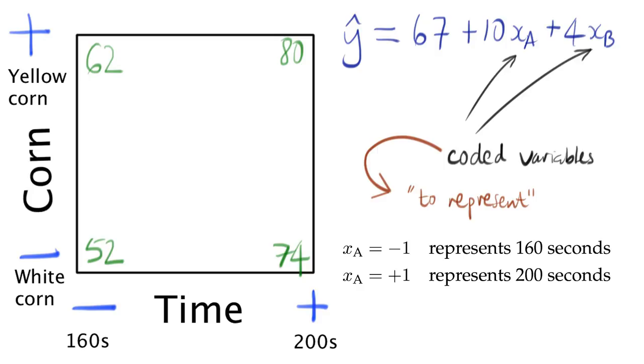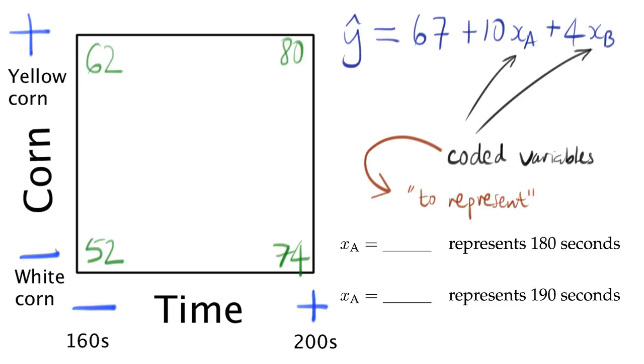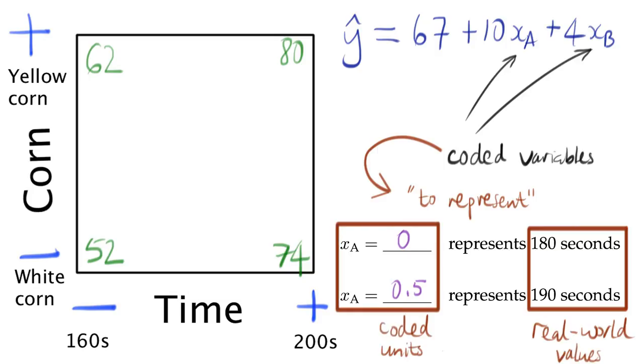For xa, the representation is similar. The minus 1 represents 160 seconds, and the plus 1 represents 200 seconds. How would you represent 180 seconds? How would you represent 190 seconds? There's a way to move from real world units to these coded units, and I'll show you that in a future class.